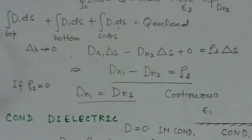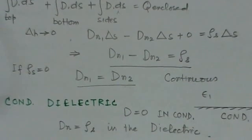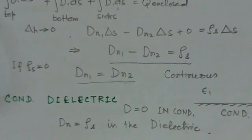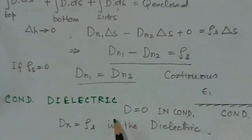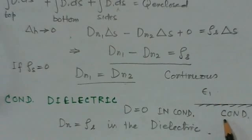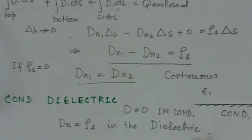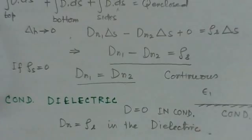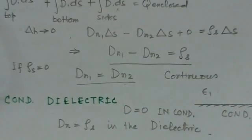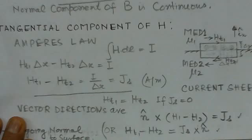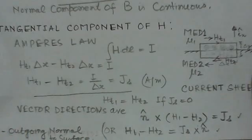For a conductor-dielectric boundary, the displacement density D inside the conductor is zero. So we are left with Dn equals rho_s — meaning the normal component of the displacement density in the dielectric equals the surface charge density on the conductor surface.